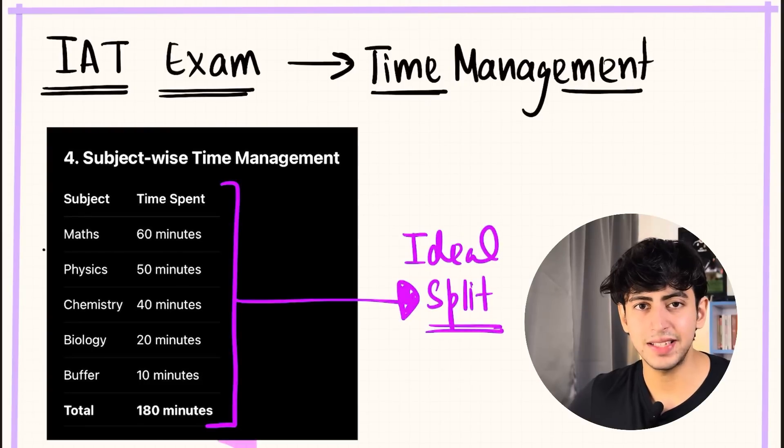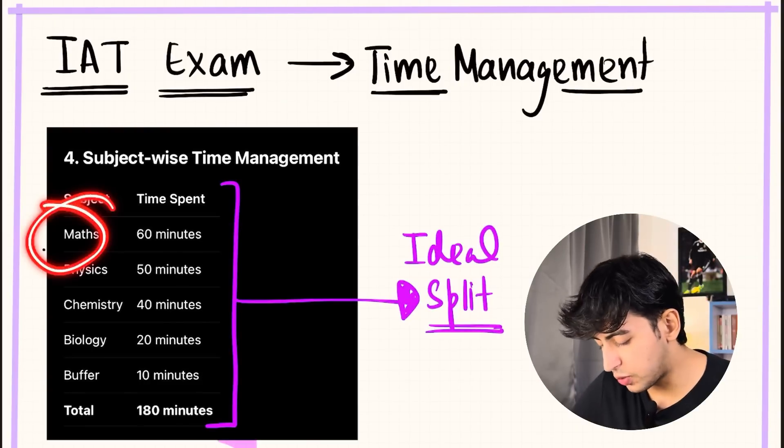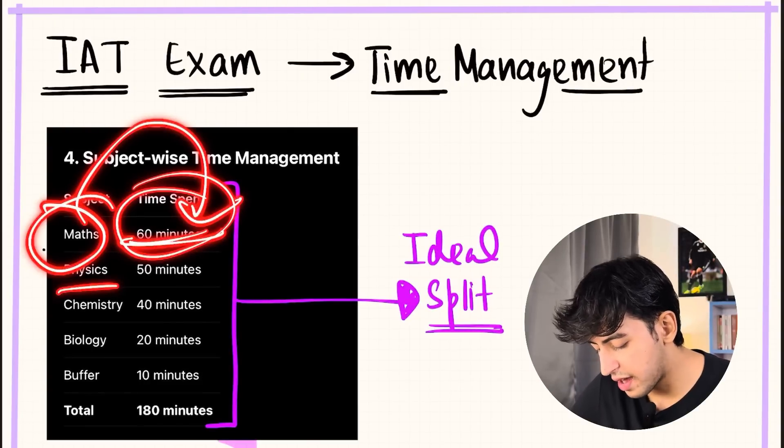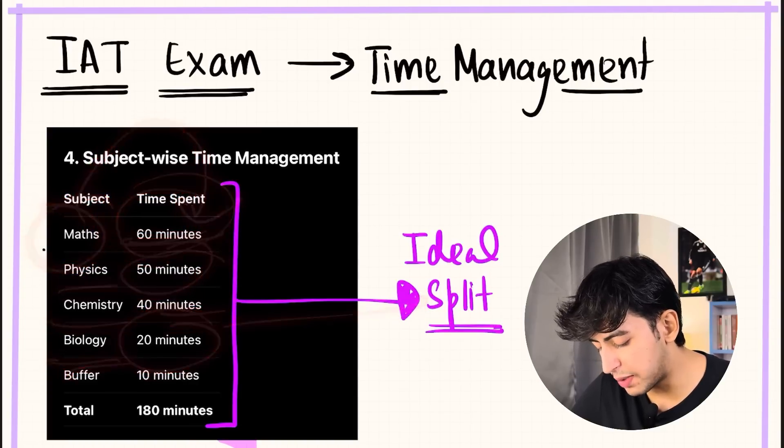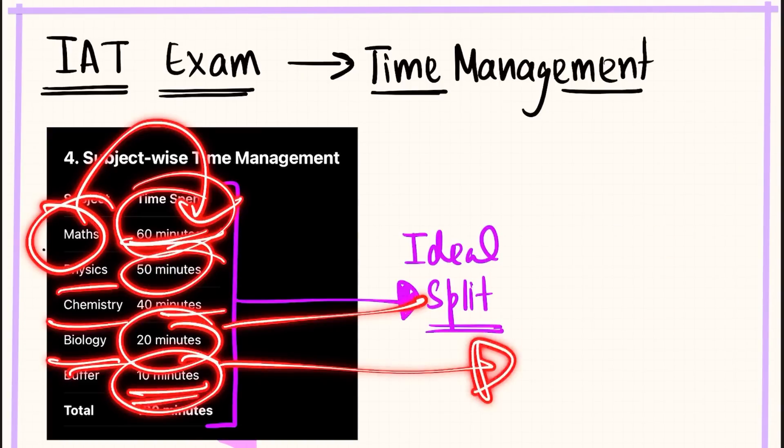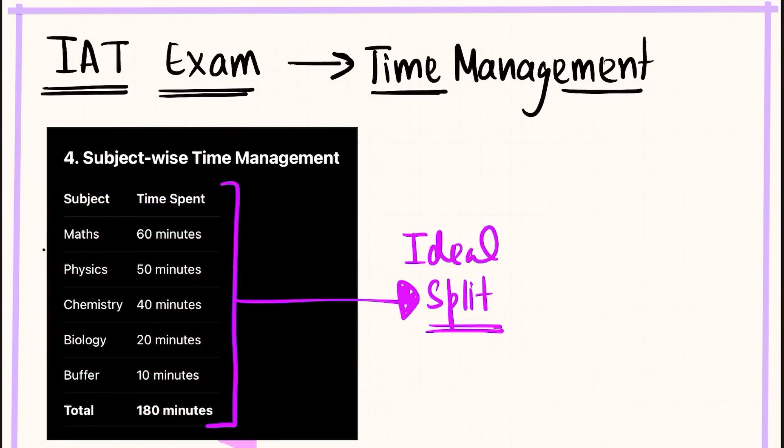Coming to the fact that you have to give the subject-wise time management for this exam: ideally speaking, you have to give maths 60 minutes or 1 hour, physics 50 minutes, chemistry 40 minutes, bio you have to give 20 minutes, and buffer—revision time—you have 10 minutes going through the paper again.